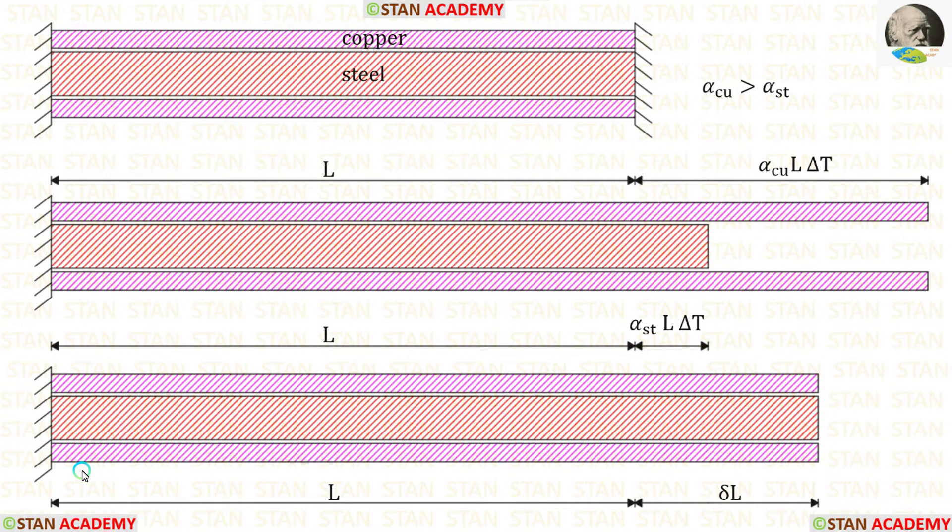In the first figure, the rod is rigidly fastened. So when the temperature increases, there will be no change in length. Suppose the bar is free to expand, copper will be expanding more than steel because the alpha value for copper is higher than the alpha value for steel.